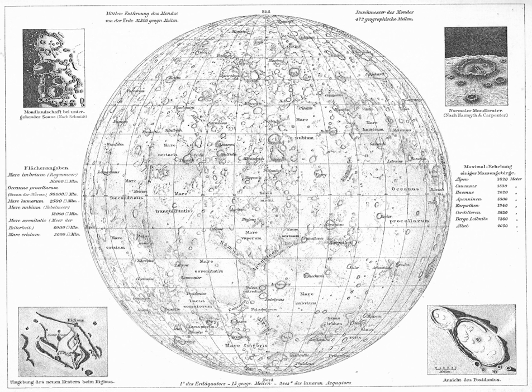See also: Astronomical naming conventions, lists of geological features of the Solar System, list of adjectivals and demonyms of astronomical bodies, naming of moons, selenography, and toponymy — the scientific study of place names, their origins, meanings, use and typology.